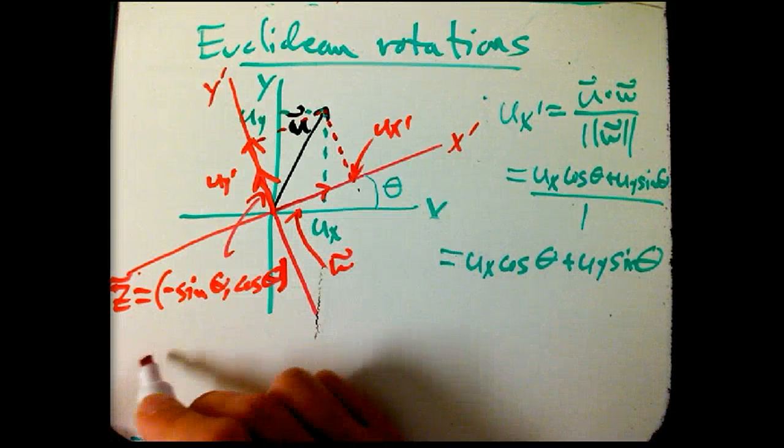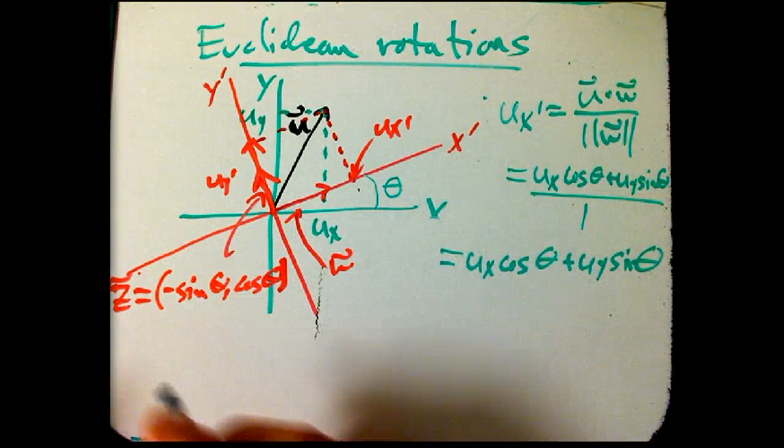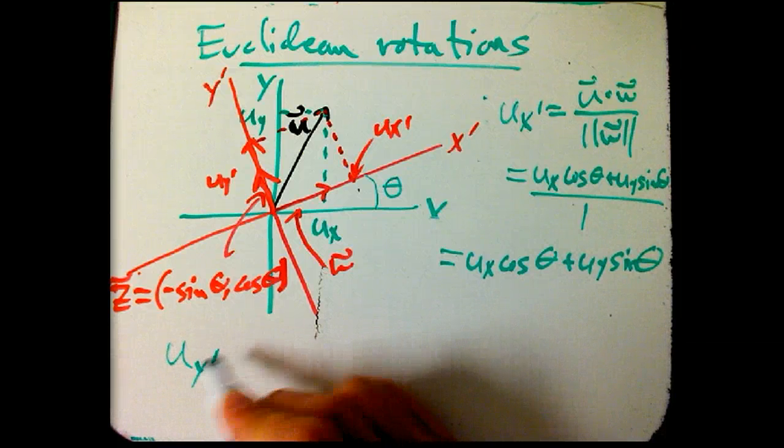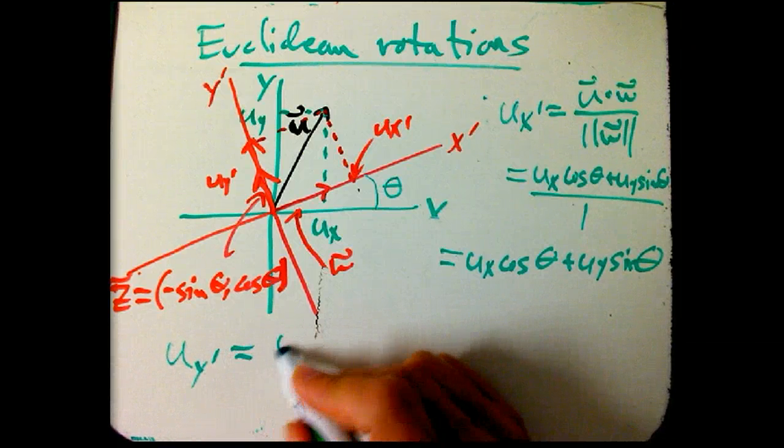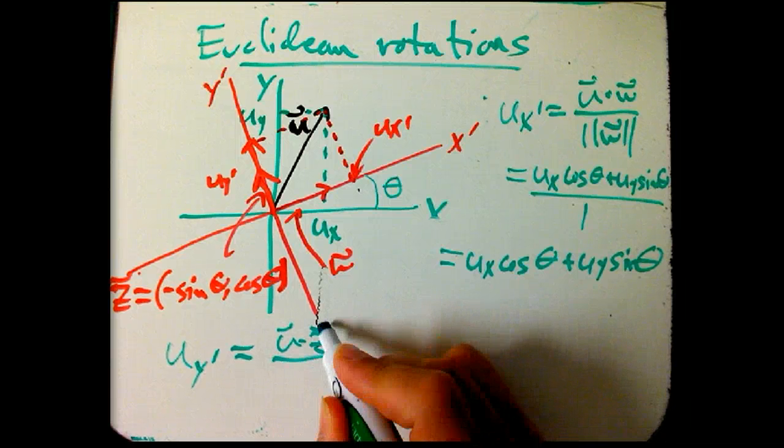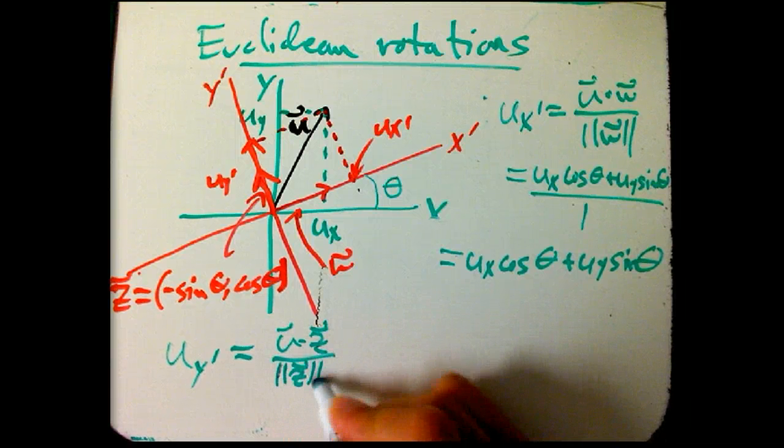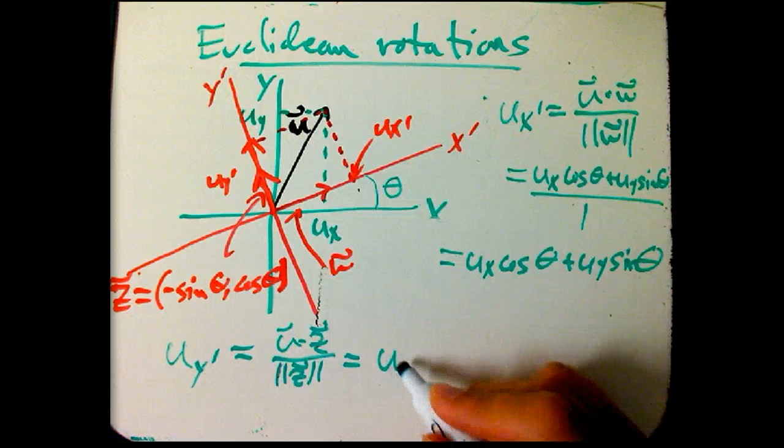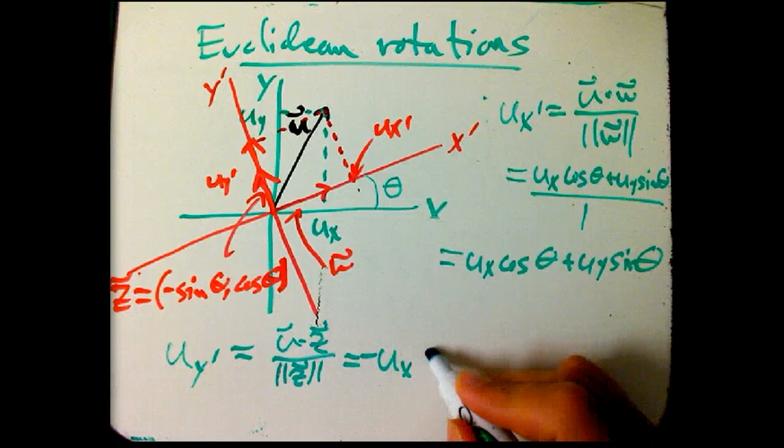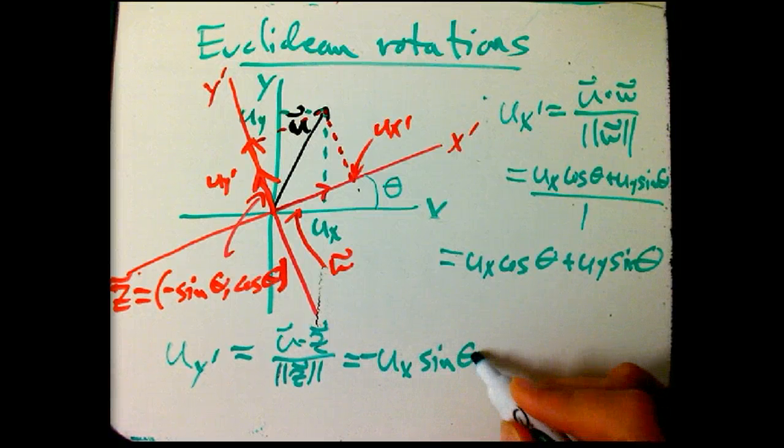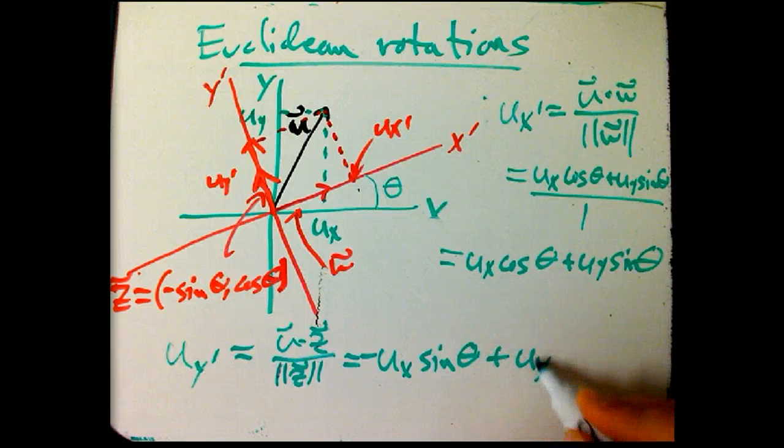And so, we do this projection again, and we see that U in the Y prime direction, that component, is U dot Z, over, again, this is a unit vector, and it's just going to be minus UX sine theta plus UY cosine theta.